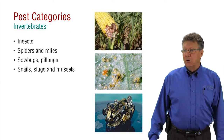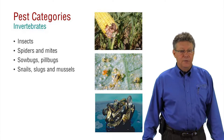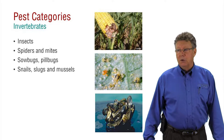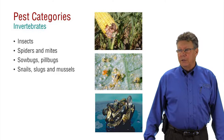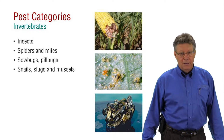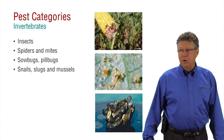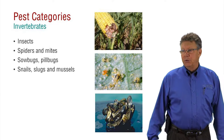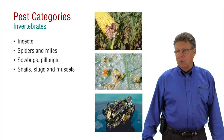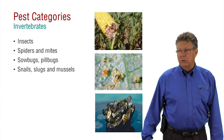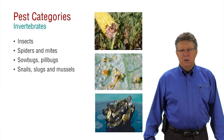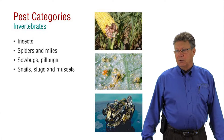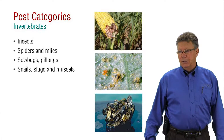Invertebrate pests include a wide variety of insects like aphids, caterpillars, grubs, and wasps. Invertebrates also include the insect cousins: spiders and mites, sow bugs and pill bugs, and snails, slugs, and mussels. Pictured here are western bean cutworm larvae, which is in the immature stage of a moth. Plant feeding mites, as seen from under a microscope, and zebra mussels, an aquatic invasive species.